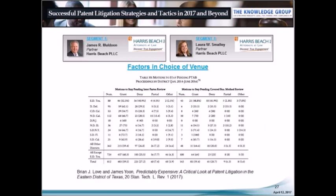Another important consideration in choosing venue is whether you want to avoid having the district court stay the litigation due to a PTAB proceeding. Defendants often want to stay litigation, but there are also instances where plaintiffs want a stay — for example, to avoid expense if validity is the main issue. Motions to stay pending inter partes review range from over 70% granted in the Northern District of Illinois and Southern District of Florida, to 60% in Delaware and the Northern District of California, to 50% in Texas, and 43% in the Southern District of California. There are many factors and statistics available to consider in choosing a district.